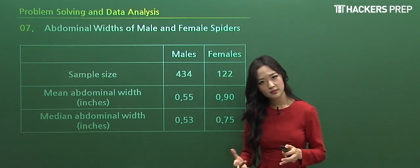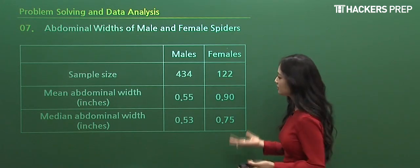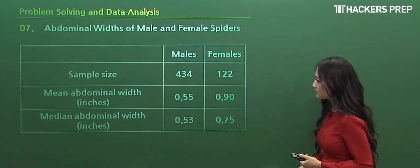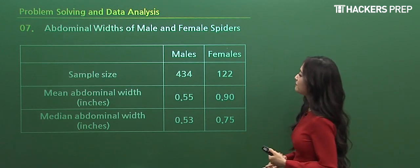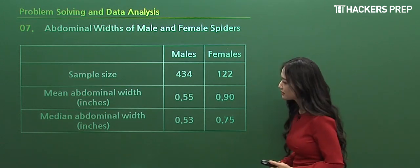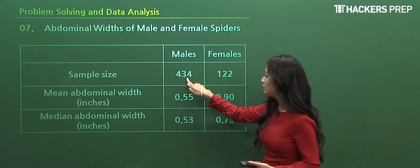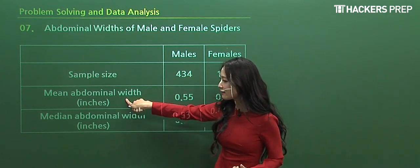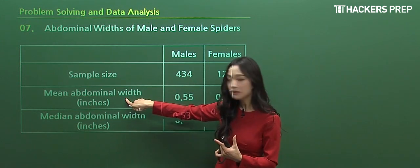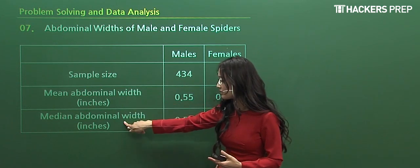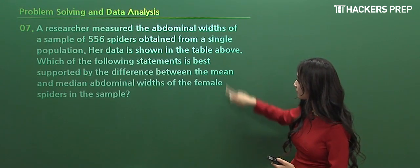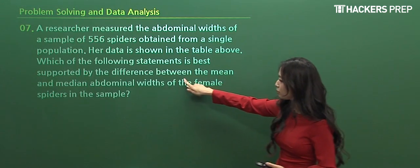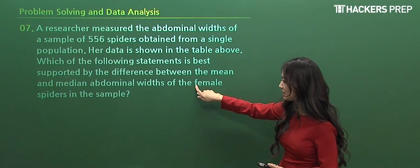So let's look at number seven and go through this and see how they can ask questions. The title states the abdominal widths of male and female spiders, and we have the sample size. We can see that we observed more of the male species, and the average abdominal width, that's what mean means, and the median width.